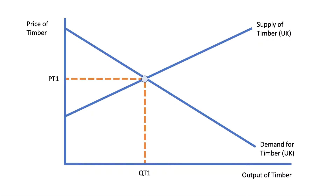Here's our market: we have the price of timber on the y-axis and the quantity of timber on the x-axis. It's quite important in this analysis to draw your demand and supply curves to the y-axis, especially when we come to look at welfare.